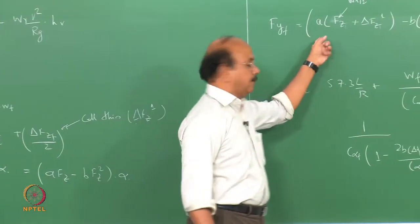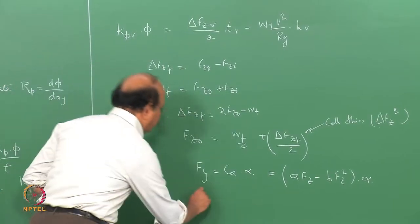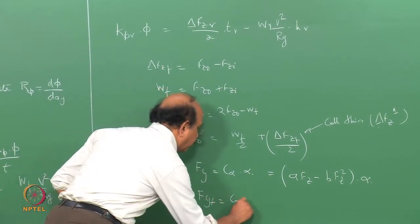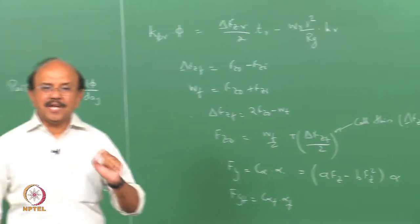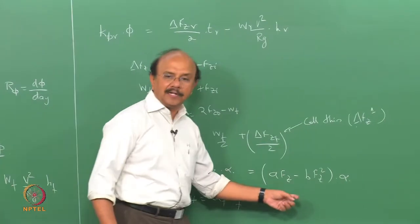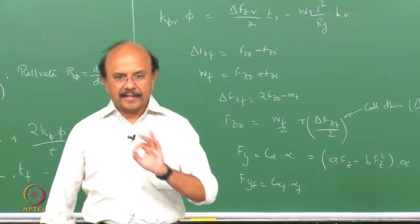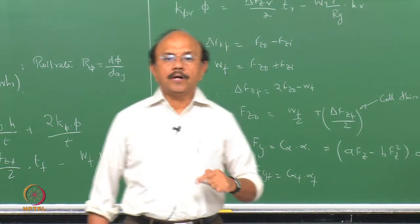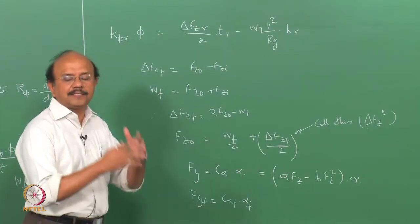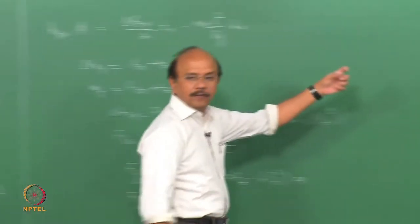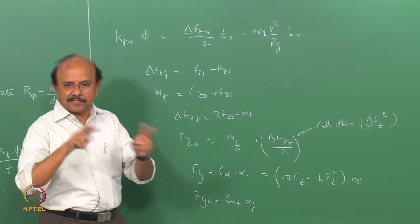Let me explain this. Fy is a general expression. If I have to put the front: F_yF equals C_alpha_F into alpha_F. If rear: F_yR equals C_alpha_R into alpha_R. What is the C_alpha_F expression? For a tyre it is A·Fz minus B·Fz² — that is for one tyre. When I want to look at the front F_yF — that is the two front tyres' lateral force — I have to substitute and get the sum of the outer tyre's contribution plus the inner tyre's contribution, multiplied by alpha.